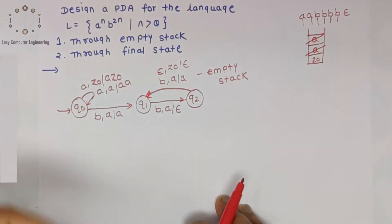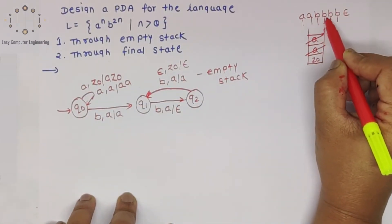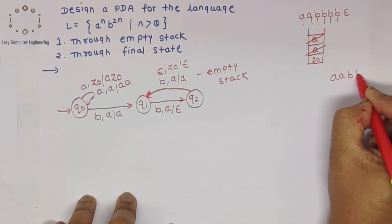Now we will check how this PDA will work for the example AABBBB.